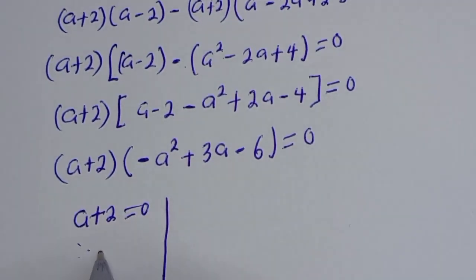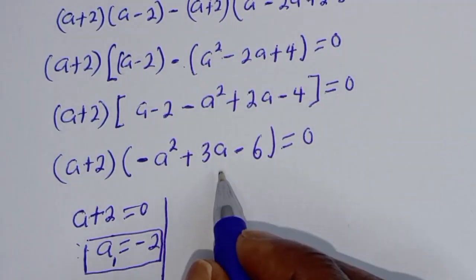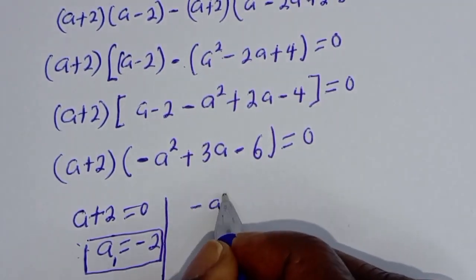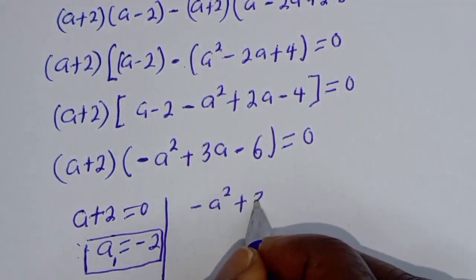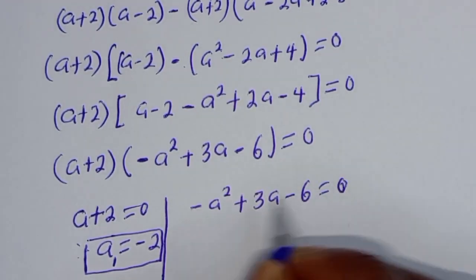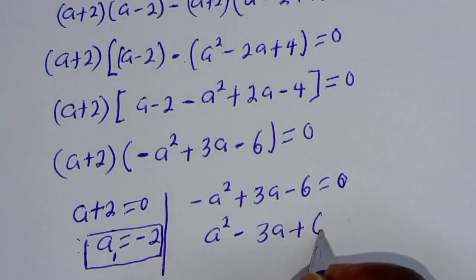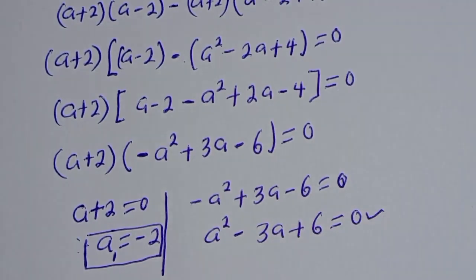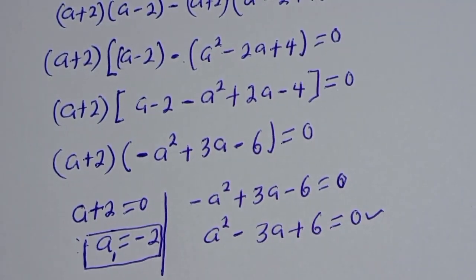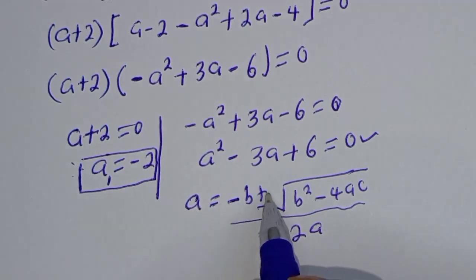There are two cases. The first case: a plus 2 equals 0, therefore a equals minus 2, which is a₁. The second case: minus a squared plus 3a minus 6 equals 0. Multiplying through by minus 1 gives a squared minus 3a plus 6 equals 0, a quadratic equation.